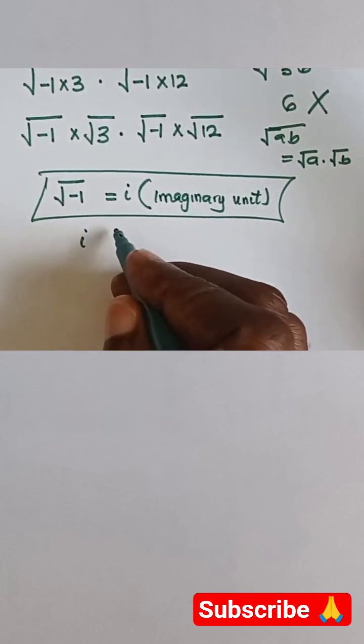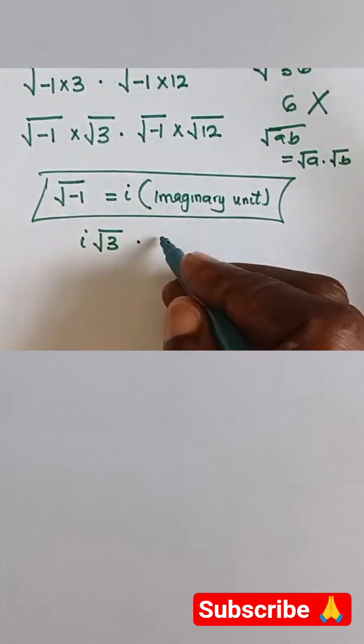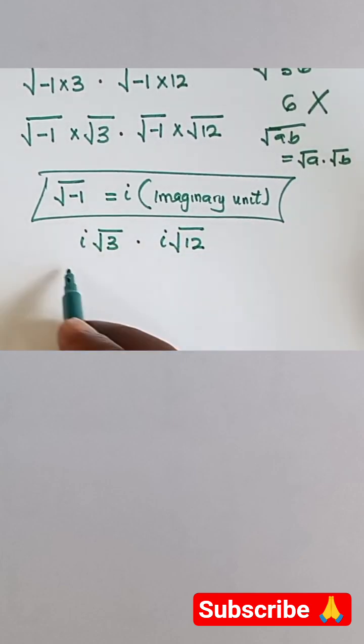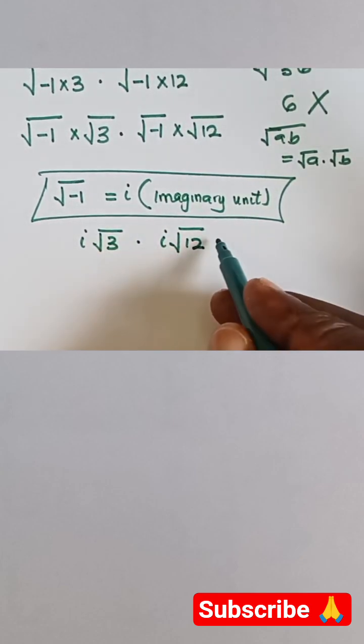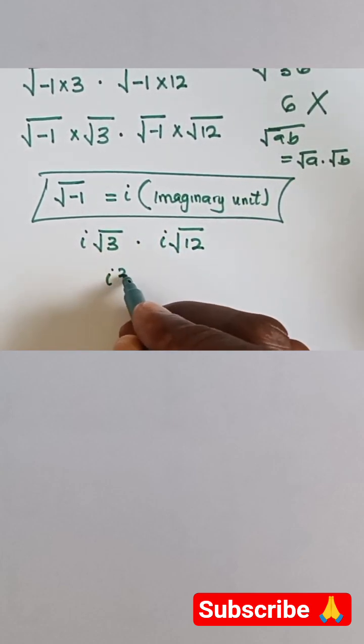From here we can write i to replace √-1 multiplied by √3. Also here we write i and we have √12. Now we multiply: i times i will give us i².